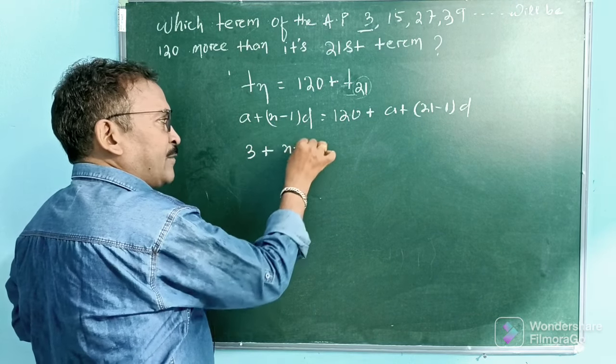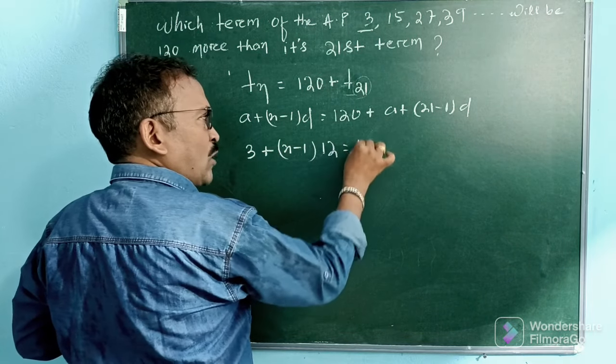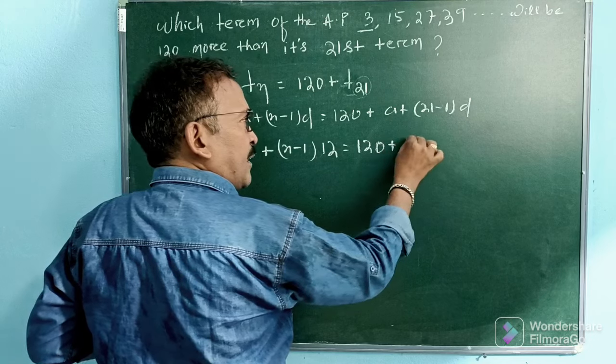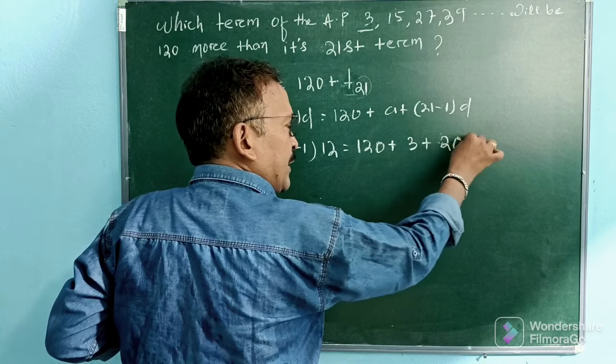So a plus (n-1) into d is equal to 120 plus 3 plus (21-1) means 20 into d means 12.